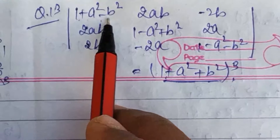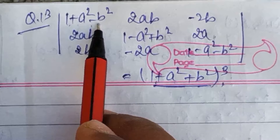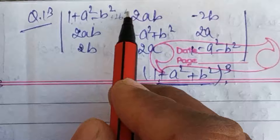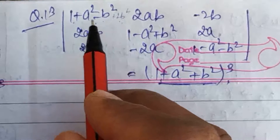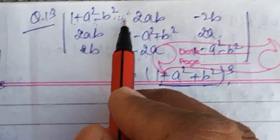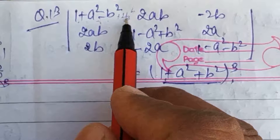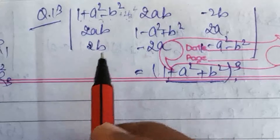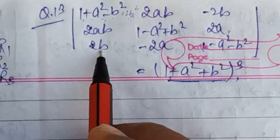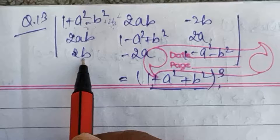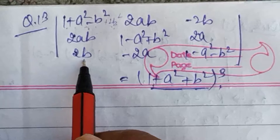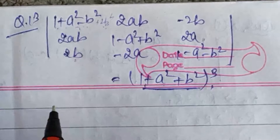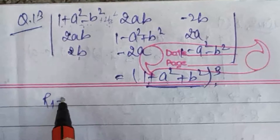तो minus b square की जगह किसी operation के माध्यम से plus b square लाने की कोशिश करता हूँ। Plus b square तब आएगा जब इस minus b square में मैं plus 2b square add कर दूँ। 2b square तब आएगा जब मैं third row में जहाँ 2b है, उसे b से multiply करके R1 में add कर दूँ। तो R1 पर operation लगाता हूँ: R1 plus b·R3।